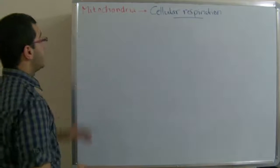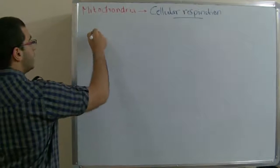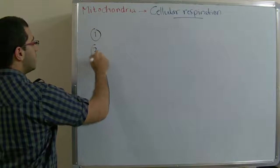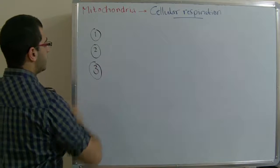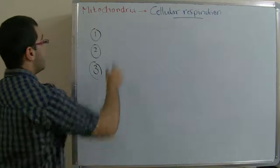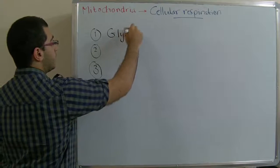But before talking about this, we have to know that cellular respiration takes place in three successive steps. The first is called glycolysis.